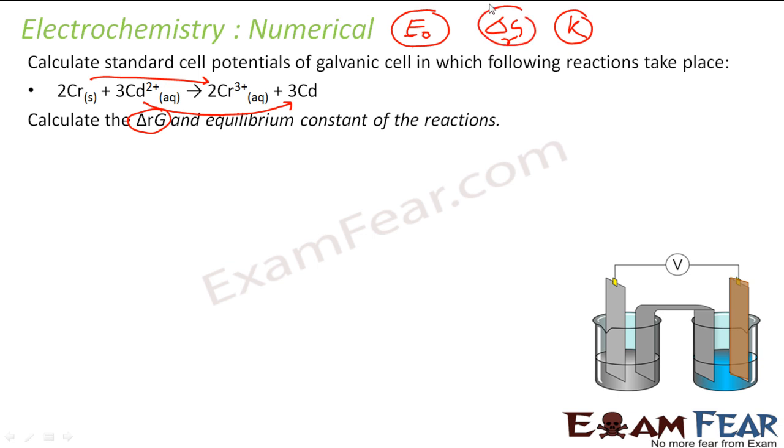Let's see how many electrons are involved. Two chromium becomes two Cr³⁺ ions, so six electrons are involved here. If you want to write the cell representation for this: chromium gets oxidized to Cr³⁺ and on this side cadmium 2+ gets reduced to cadmium. We want to find E° of the cell, which is nothing but E right minus E left.